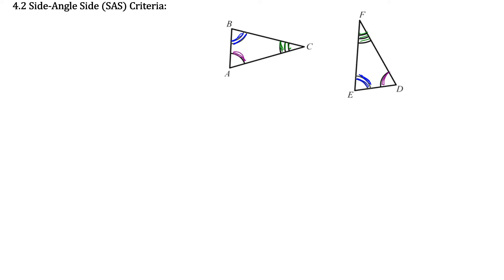We've got corresponding sides: AB matches up with ED, making them congruent. The single and double markings show that. We also have BC corresponding with EF — double and triple markings — making those congruent. And lastly, AC corresponds with DF, making them congruent. So if we know we have congruent triangles, we have three pairs of congruent sides and three pairs of congruent angles.